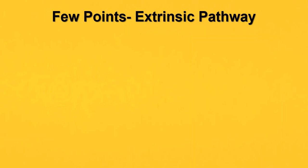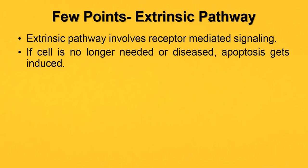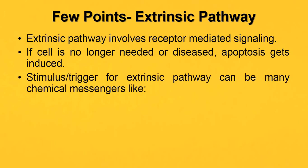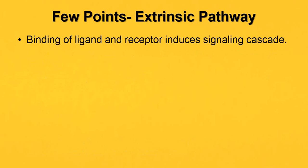Some key points about the extrinsic pathway: it involves receptor-mediated signaling. If a cell is no longer needed or diseased, apoptosis gets induced. The DNA will always first try to get repaired. The stimulus or trigger for the extrinsic pathway can be many chemical messengers — it can be FAS, TRAIL, or tumor necrosis factor. These molecules may be secreted by neighboring cells if a cell is damaged or no longer needed, signaling that the apoptosis pathway should be switched on.